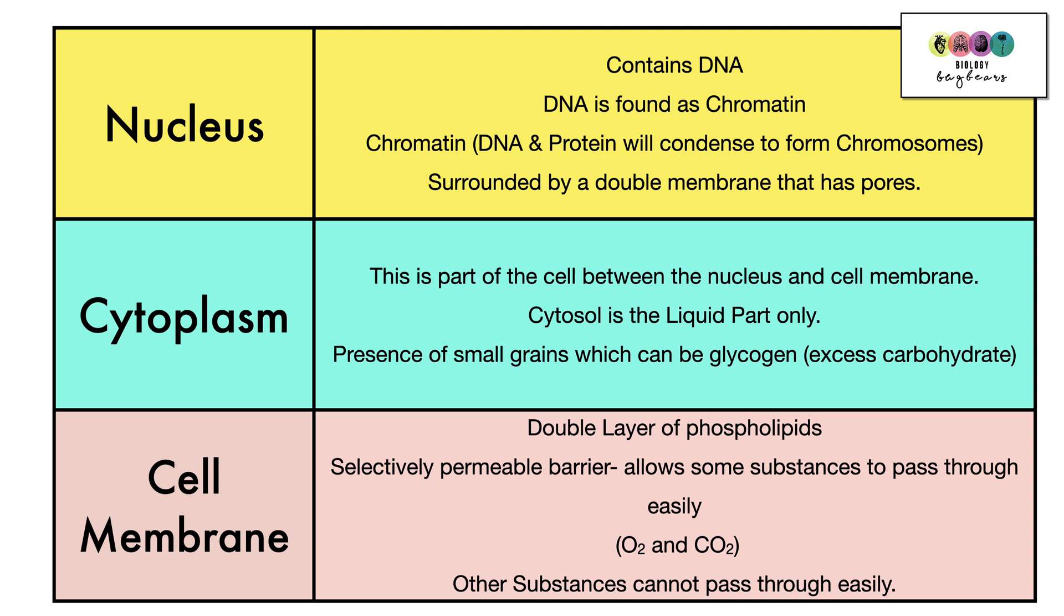So cytoplasm includes the liquid and it includes any little organelles that are floating in it. And in the cytoplasm, sometimes you'll see small grains in animal cells and these can be glycogen, excess carbohydrate. So then we have the cell membrane that keeps the cell together. It's really a double layer of phospholipids. It's a selectively permeable barrier because it allows some substances to pass through like oxygen and carbon dioxide easily and prevents the passage of others.